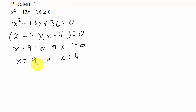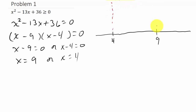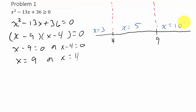These are our zeros, so we plot them on the number line. We've got 4 and 9, and that splits things up into three regions. We need to pick a number from each region: a number less than 4, a number between 4 and 9, and a number larger than 9. So we'll choose x equals 3, x equals 5, and x equals 10.